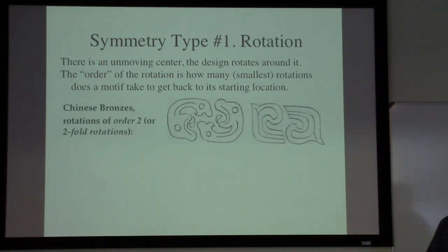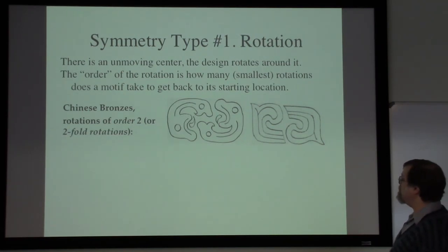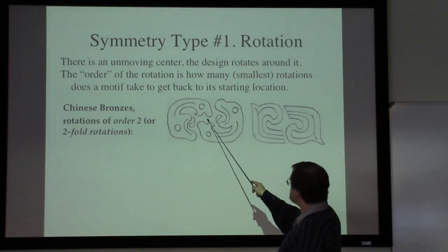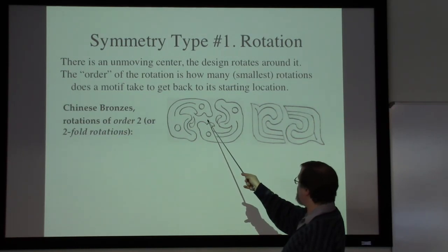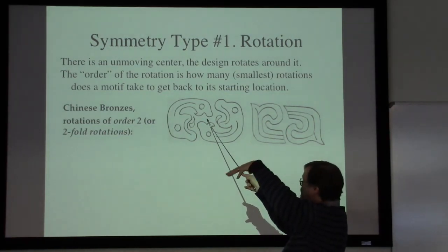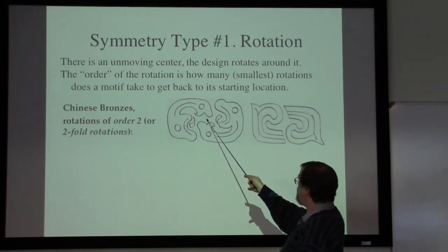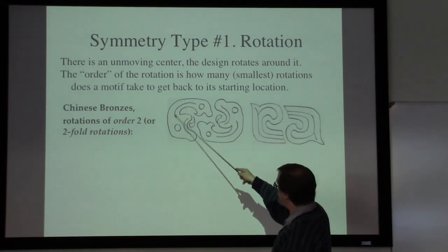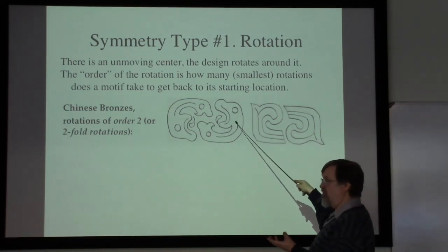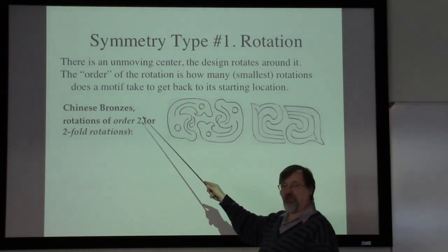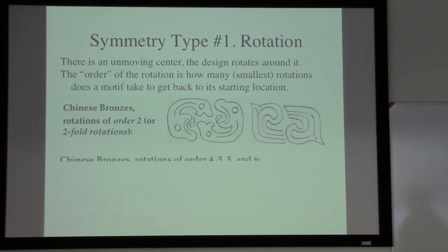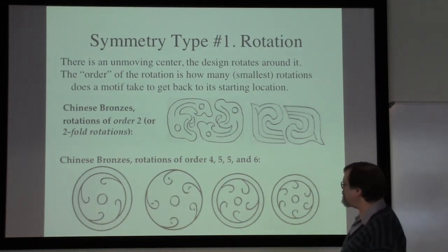From a study on the geometric art of Chinese bronzes, these designs have a rotation point — if you hold that point fixed and rotate the entire design by 180 degrees, the design lands back on top of itself. Since the design rotates once to reach the opposite position and again to return to the start, we refer to this as a rotation of order two, or a twofold rotation.